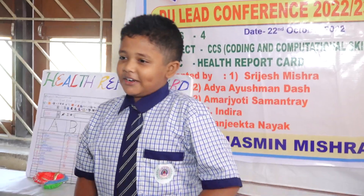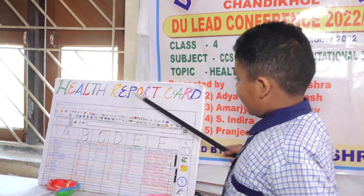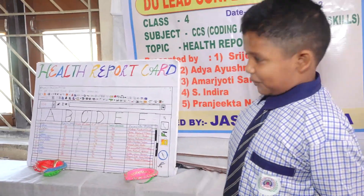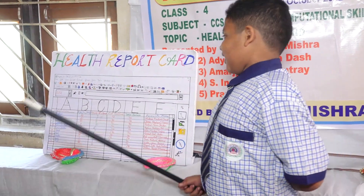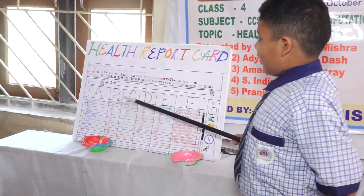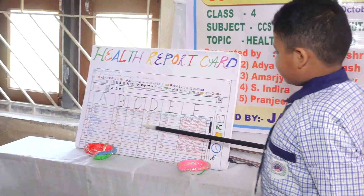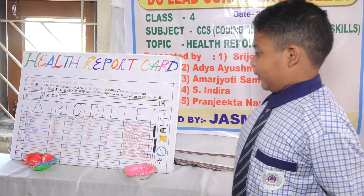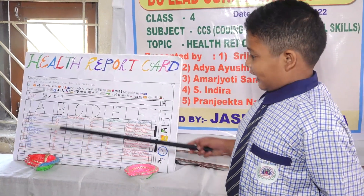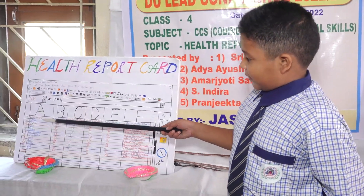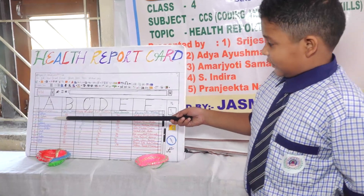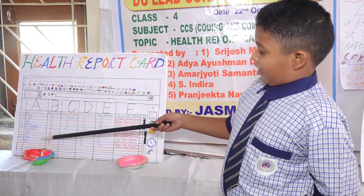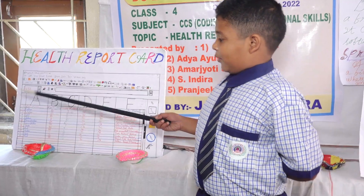I have made a family health tracker using LibreOffice Calc. I took the names from my family members, then I used the spreadsheet. I added them in the first column: father, mother, son, sister, grandmother, grandfather, uncle, and brother.